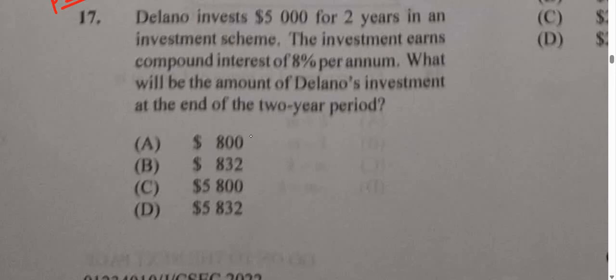Here we have a compound interest problem. We have $5,000 invested for two years in an investment scheme. The investment earns compound interest at 8% per annum. They want to find Delano's investment at the end of a two-year period.